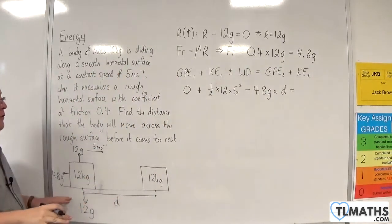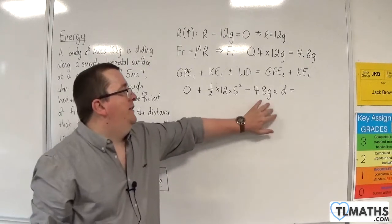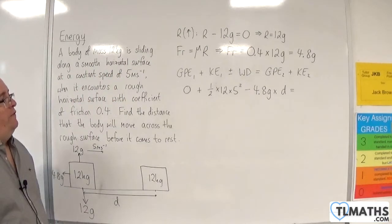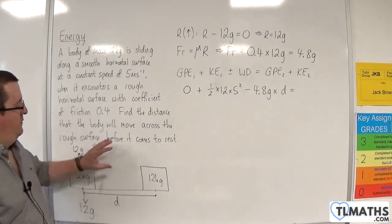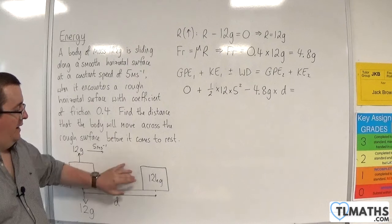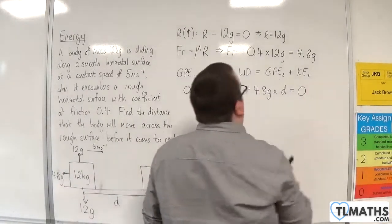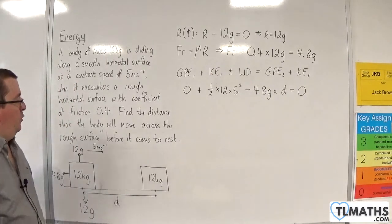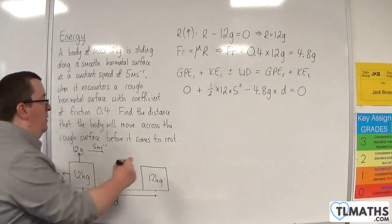There are no other horizontal forces acting, so that's the only one we need to consider. Then we've got the final gravitational potential energy. Because the block hasn't moved up or down, it is exactly the same height, so that will be 0. And the final kinetic energy will also be 0, because we're at rest at that point.